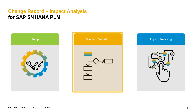Besides the object entities, you can also maintain impact rules to define when an object is impacted. A rule could be a filter or a condition. A filter is, for example, all BOMs that are in plant 1000 are impacted. A condition defines if-then scenarios — for example, if a material is a finished product, then the BOM needs to be in plant 1000.